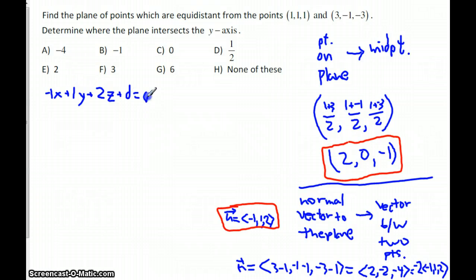And then the way we get what the d is, is by plugging the point in. Sorry, that's a pretty poor 0. I should get a tablet. So, we plug the point in, and take negative 1 times 2, plus 1 times 0, plus 2 times negative 1, should equal to, sorry, plus a d should be equal to 0.